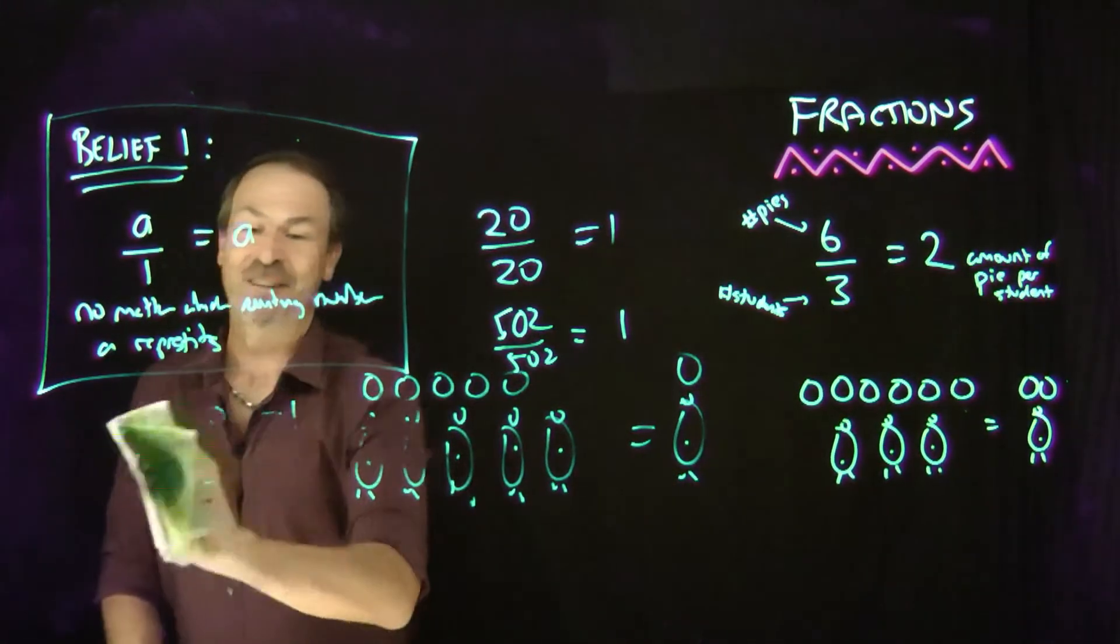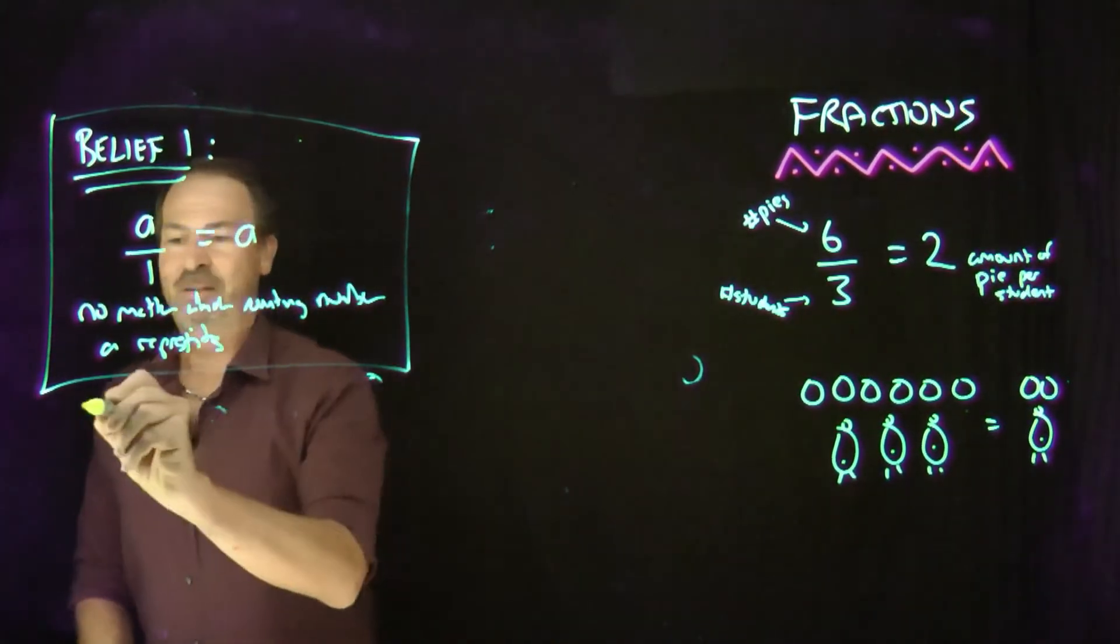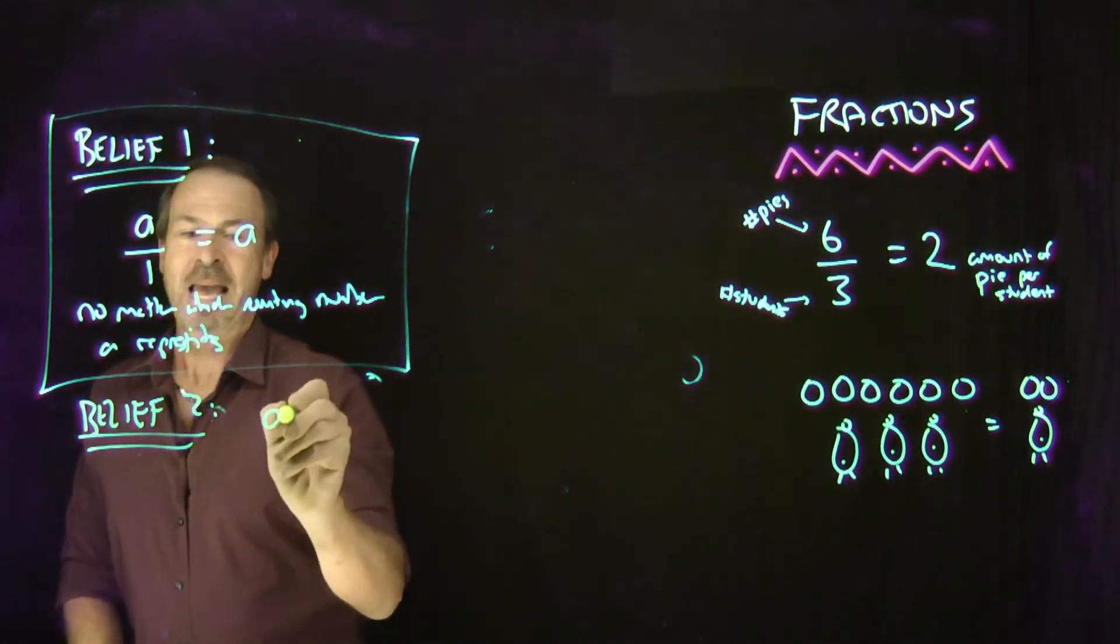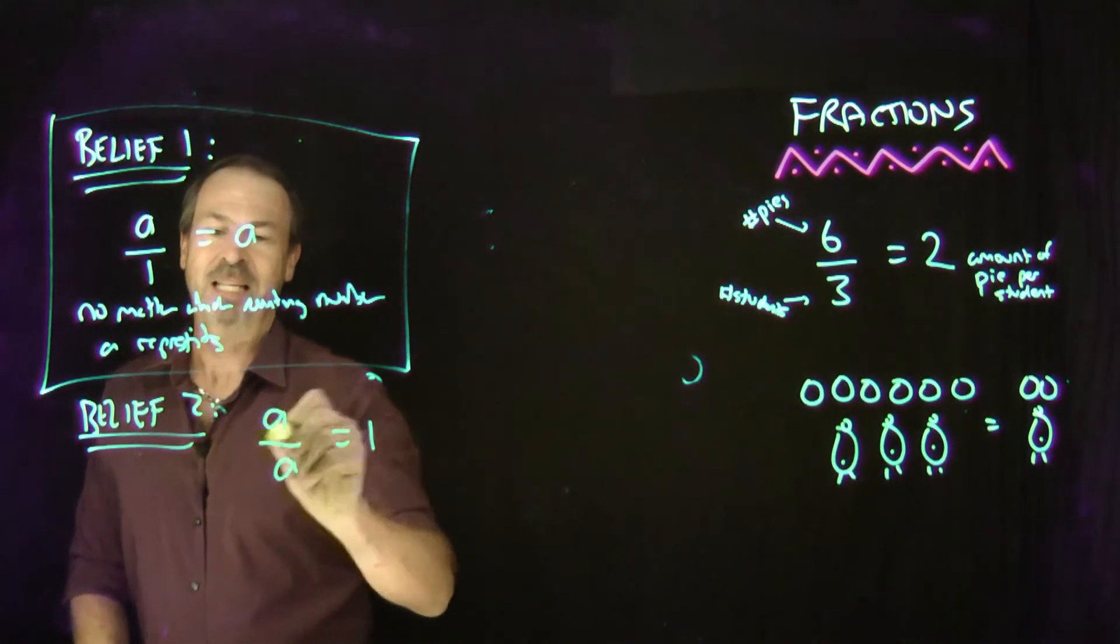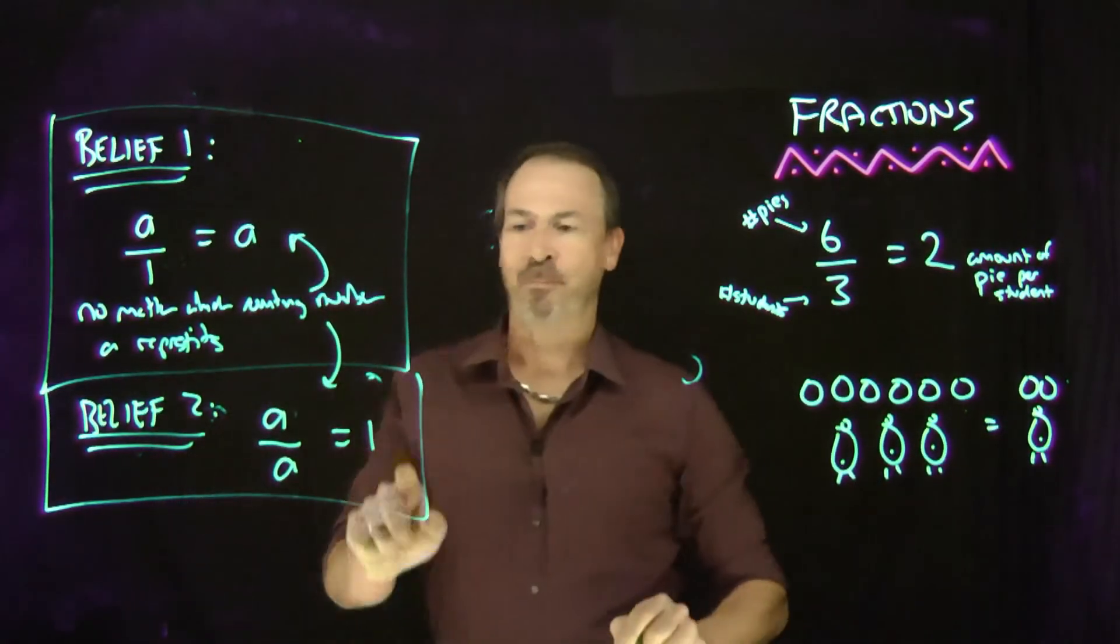There's our second fundamental belief of fractions. Belief 2: 'a' pies for 'a' students makes 1 pie per student, no matter which counting number 'a' represents.